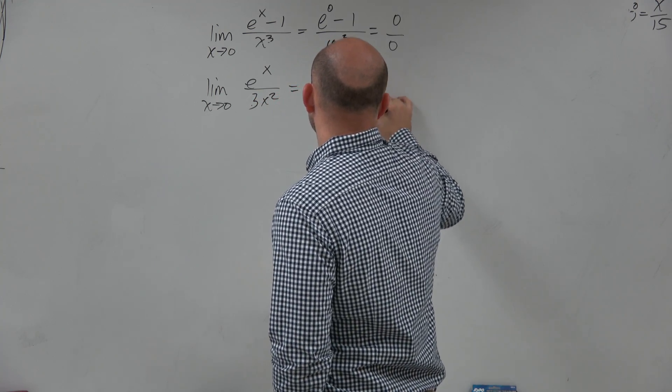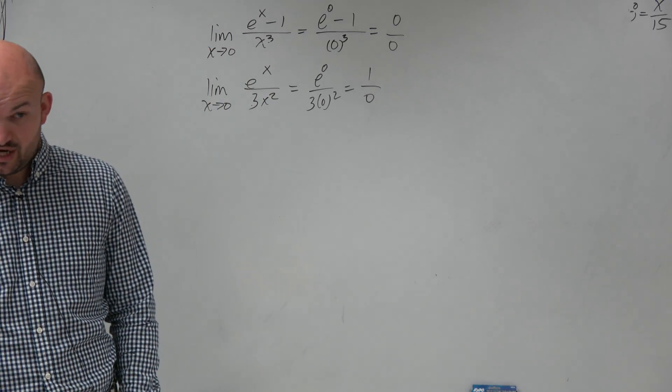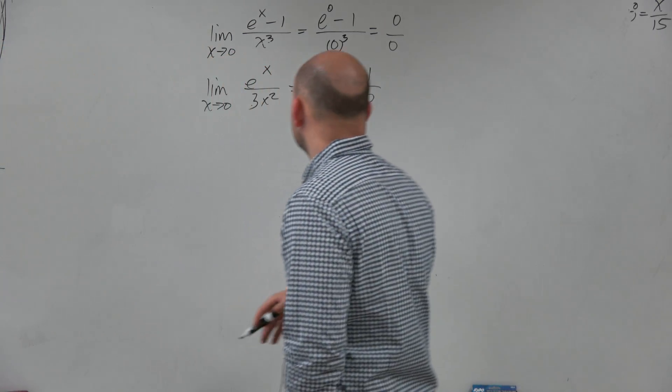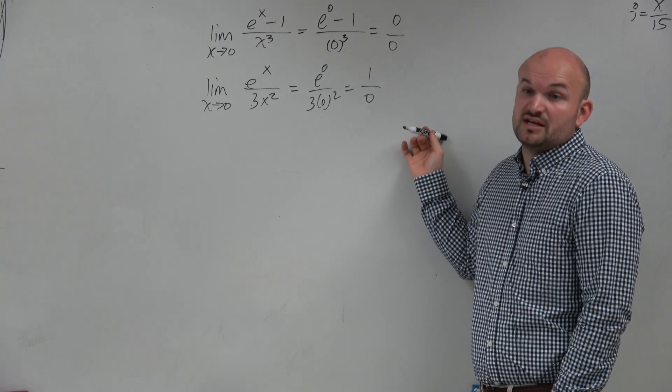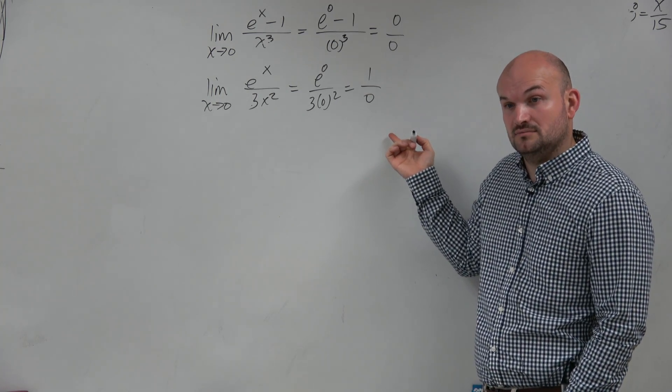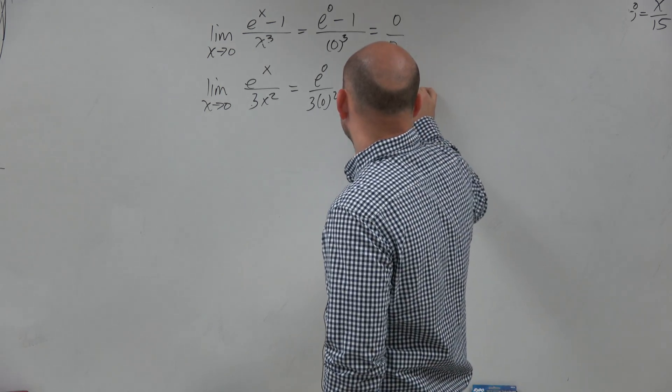which equals 1 over 0, which is not indeterminate form. So I'm done with applying the derivative. But we now know that this limit is undefined. It does not exist, right?